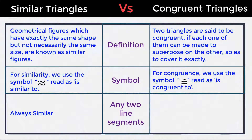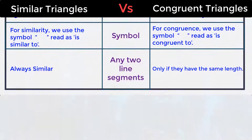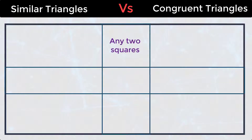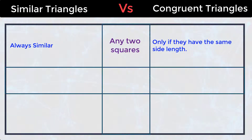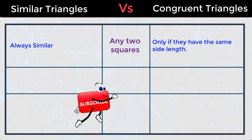Any two line segments in similar triangles are always similar. Any two line segments in congruent triangles are congruent only if they have the same length. Any two squares in similar triangles are always similar; in congruent triangles, only if they have the same side length.